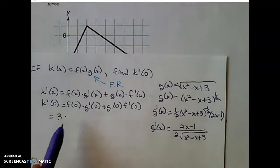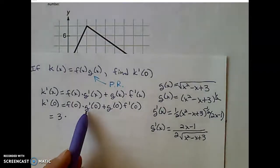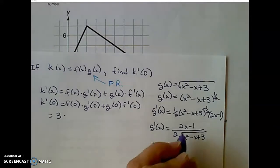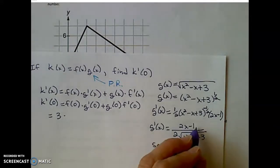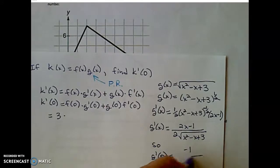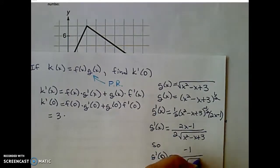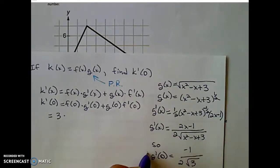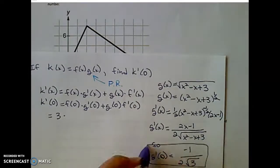Simplifying, G prime of X equals 2X minus 1, all over 2 times the square root of X squared minus X plus 3. We need G prime of 0, so G prime of 0 will be 2 times 0 minus 1, which is negative 1, all over 2 times the square root of 0 minus 0 plus 3. That's G prime of 0.